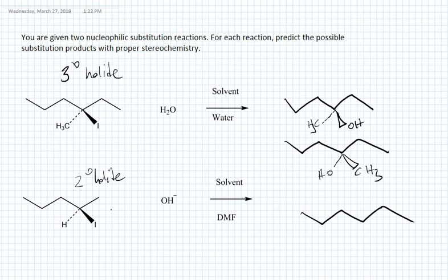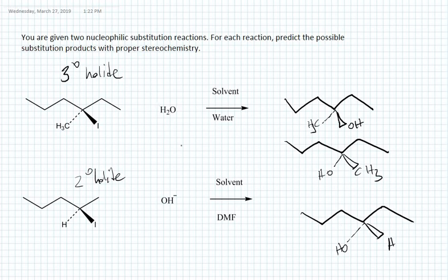We should get the inverted product: the leaving group leaves and the nucleophile is added on the opposite side. Keeping the same drawing style — wedge, dash, and hydrogen going into the paper — the stereochemistry should be opposite, so the nucleophile is added on the other side. In summary: the first reaction is SN1, giving a racemic mixture from the chiral halide. The second reaction is SN2, always giving the inverted product, which we draw as the inverted configuration.